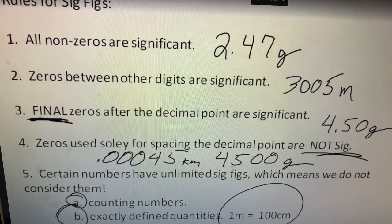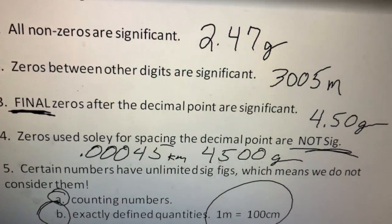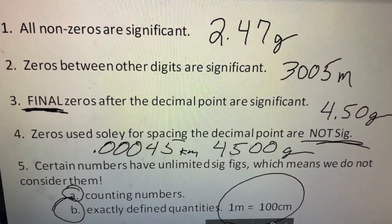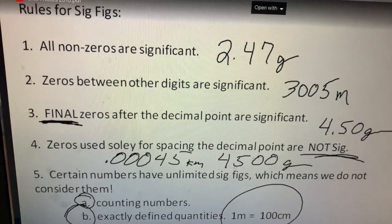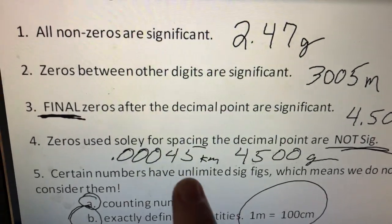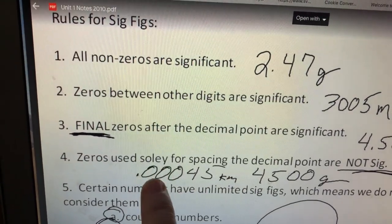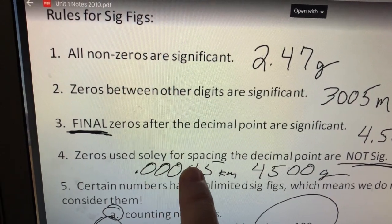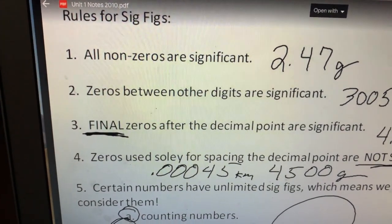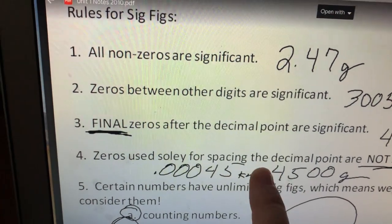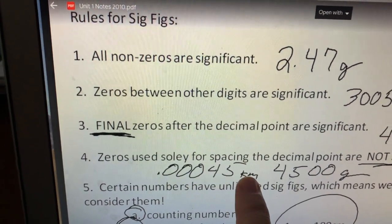Now number four is where people tend to have a hard time. Zeros used solely for spacing the decimal are not significant, and this is where the metric system comes in. Remember with the metric system it's very easy to make things larger and smaller just by changing those prefixes. So if I look at a value like 0.0045 kilometers, those zeros, yes they're after the decimal place, but they're not final. This value would only have two significant figures because these, chances are this was originally measured in let's say centimeters and then converted to kilometers. So these are just placeholders to show that this is a small amount of kilometers.